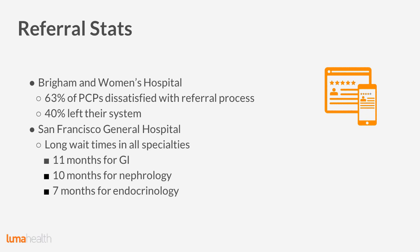Going to the other coast, San Francisco General Hospital, a public safety net hospital, also had a very problematic referral process with very long wait times — ranging from 11 months for GI to 7 months for endocrinology. That's on the extreme end, but large healthcare systems also have this problem. Interestingly, they implemented an electronic referral system and were able to get those wait times down to a few weeks. So there is hope that with the right process, we can correct the referral process.